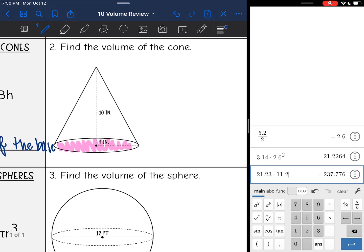Okay, so I shaded my base, and I can see that the radius is 4, and the height is 10. So I have everything I will need to do V equals one-third BH. I'm going to find B by doing pi r squared, and then the height I circled it, it's 10.